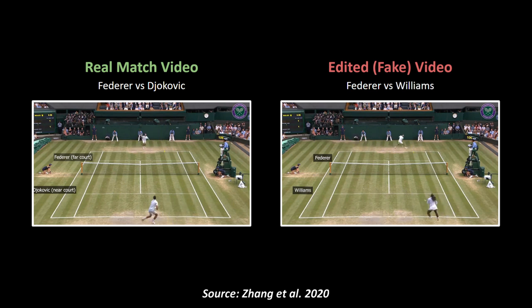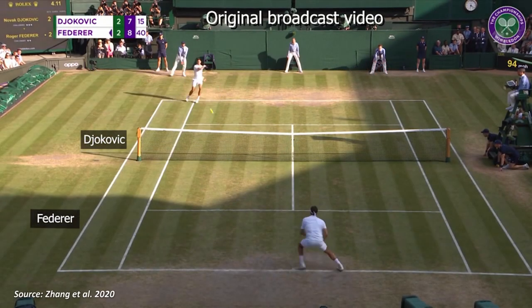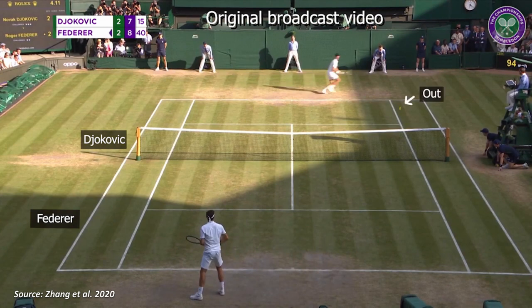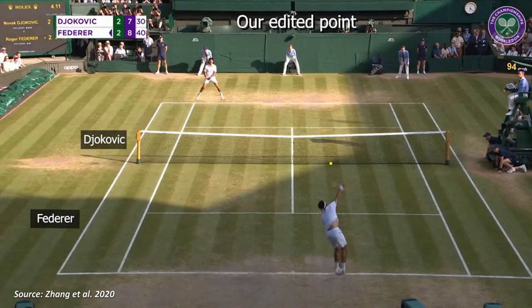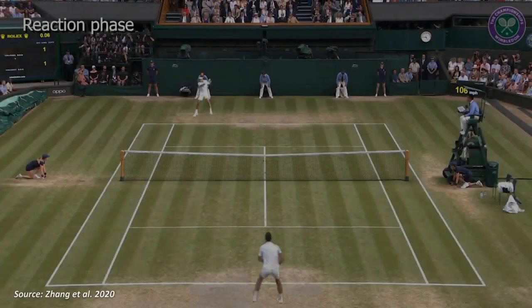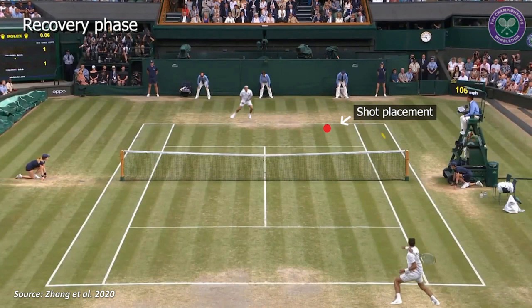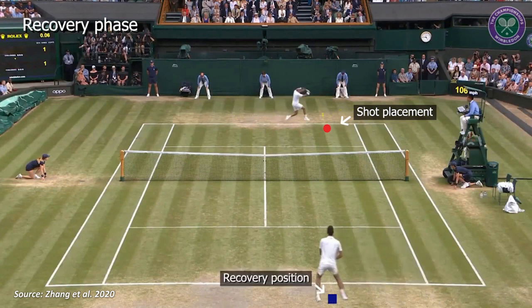This method allows us to take control over an ongoing match and play it out differently. The authors show how we can change the ending of the Wimbledon 2019 final by making Federer not lose a point that cost him the actual game. The edited version shows what it would have looked like had Federer landed his return shot inside the line. This is possible by controlling the position of the return shot, essentially converting a real-life match into an interactive video game.